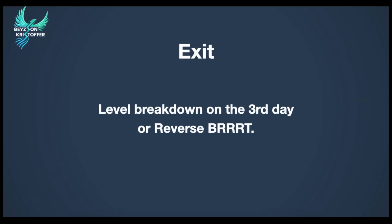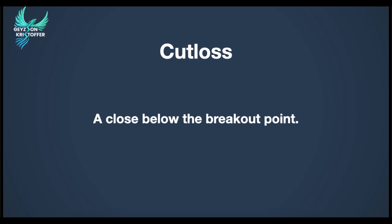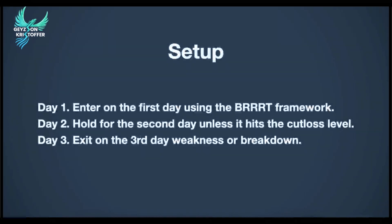Our exit will be the level breakdown on the third day or reverse BRRRT. Our cut loss is a close below the breakout point. If we bought at the breakout point and at the end of day it closes below the breakout point, we sell our shares. Here is the setup: we enter on the first day using the BRRRT framework. Day 2, we hold unless it hits the cut loss level. Day 3, we exit on the third day as long as there is a weakness or a breakdown.